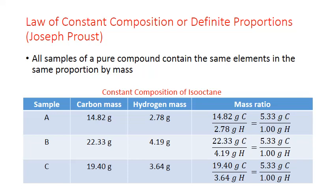So let's look at an example of this with data from the compound iso-octane. Iso-octane is made up of two elements, carbon and hydrogen. In sample A, we separate the compound into these two elements and measure the mass of each. 14.82 grams of carbon were recovered and 2.78 grams of hydrogen. If we take the ratio of these masses, we find that it will reduce down to 5.33 grams of carbon for every one gram of hydrogen.